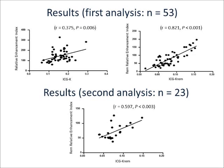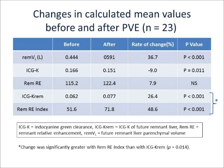ICG-K and ICG-K-REM strongly correlated with the RE index. ICG-K-REM and the remnant RE index were significantly correlated after PVE. The remnant liver volume, ICG-K-REM, and remnant RE index significantly improved from before PVE to after PVE, and ICG-K significantly decreased after PVE. However, no statistically significant change was observed in the remnant RE.